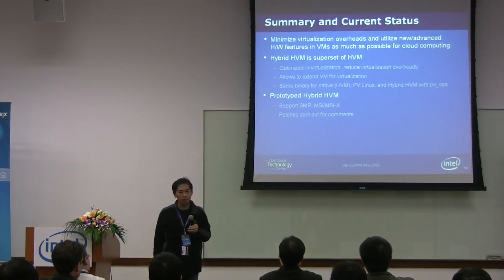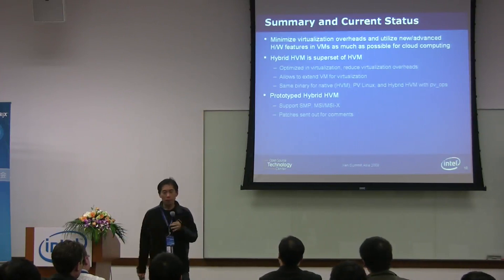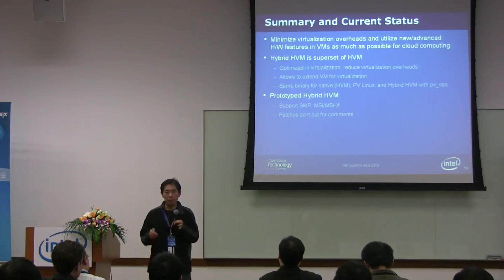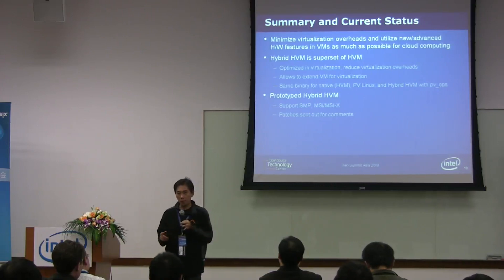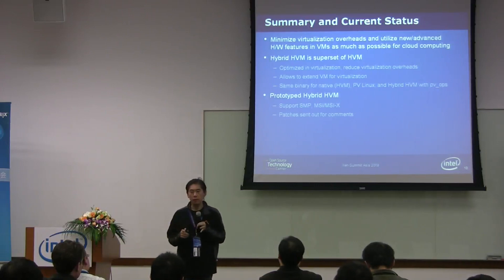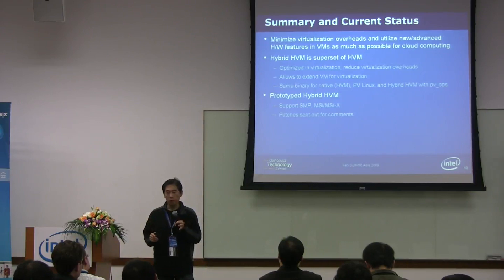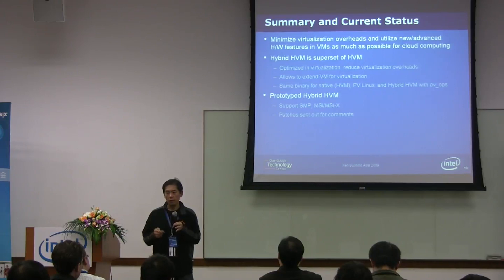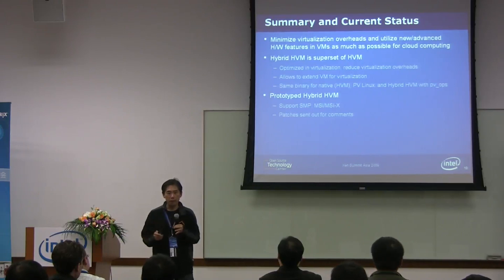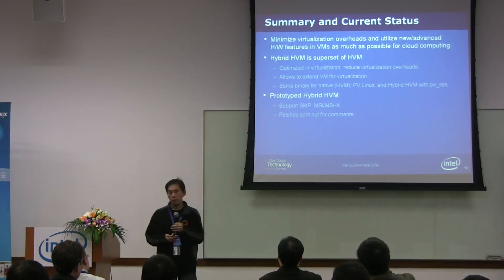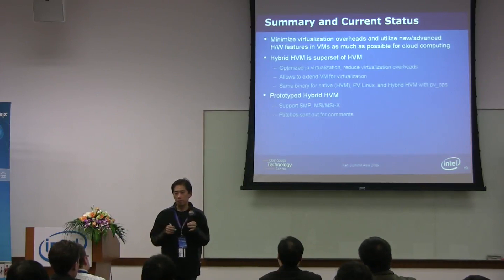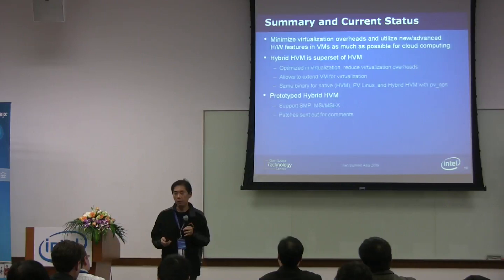So this is the summary: for cloud computing, essentially we need to minimize the overhead — the traditional overhead — if we can. And we should try to enhance the VM so that we can utilize the advanced and new hardware features as much as possible. That's something we have to do, and Xen has a very efficient API that we should be able to use in HBM.